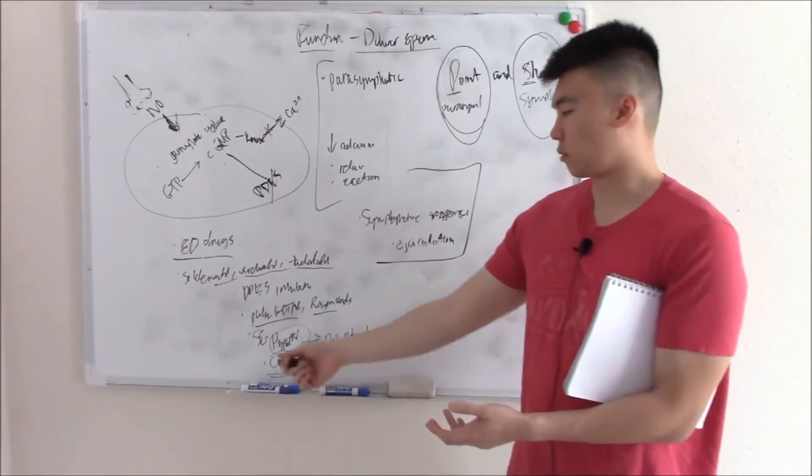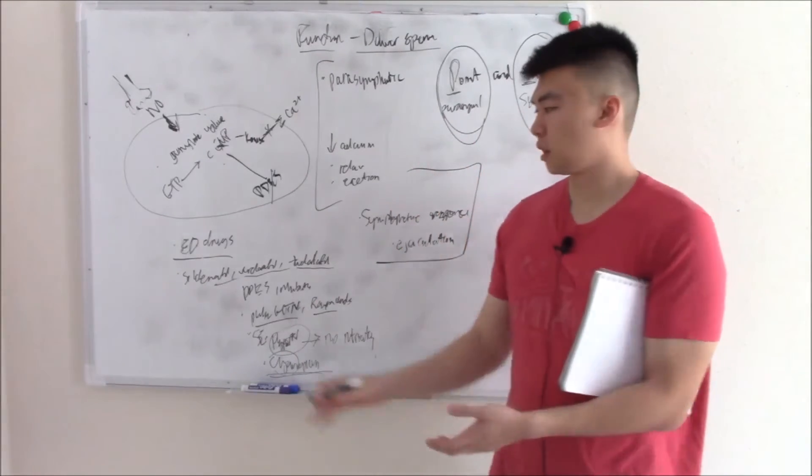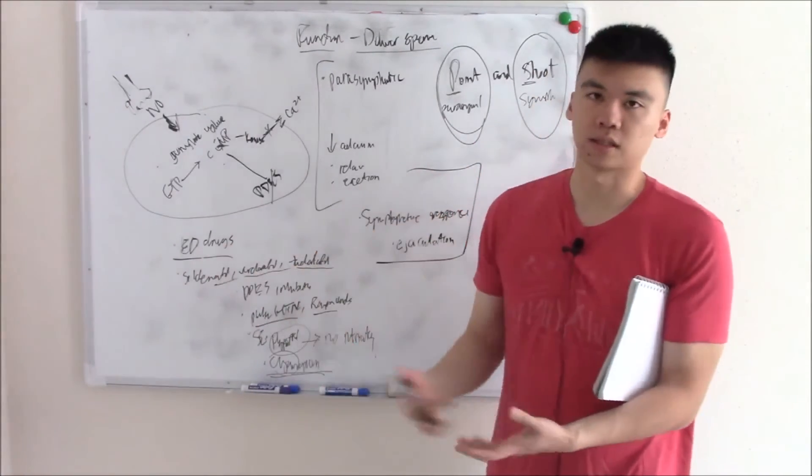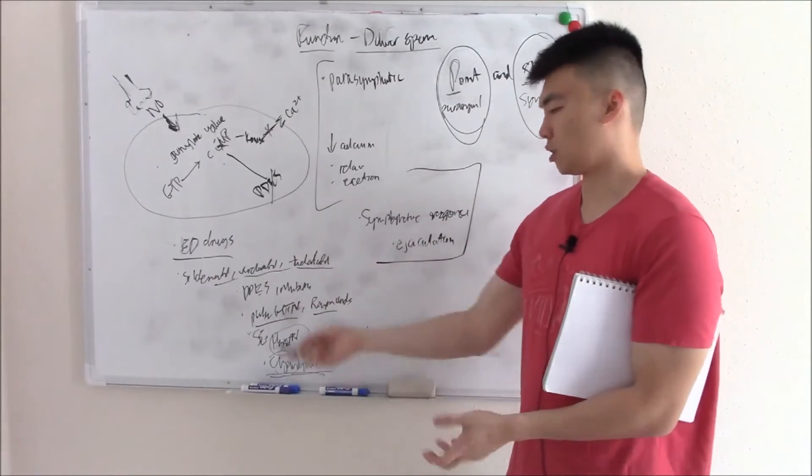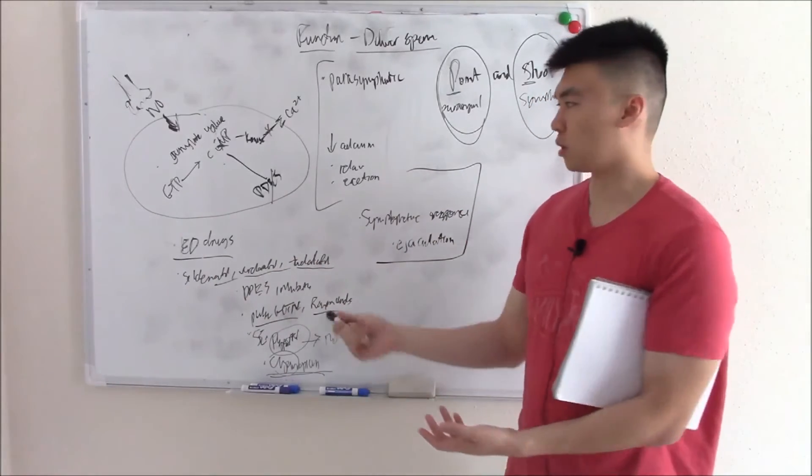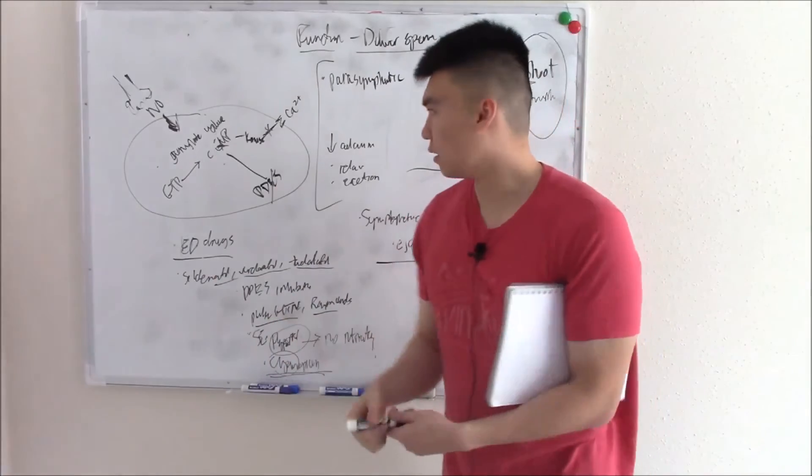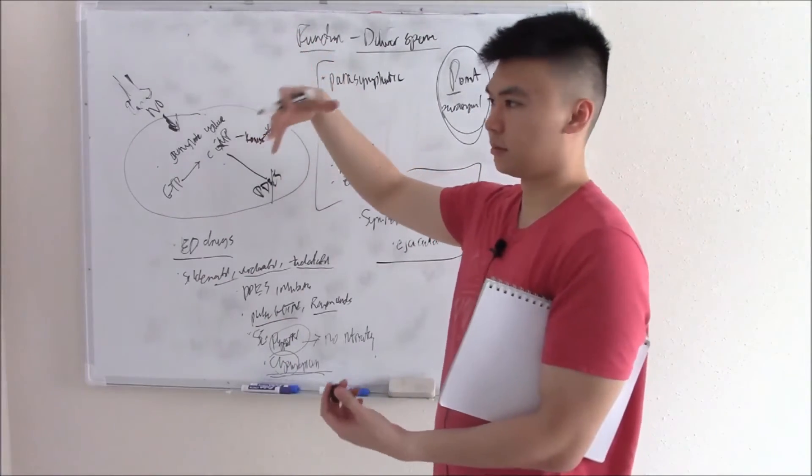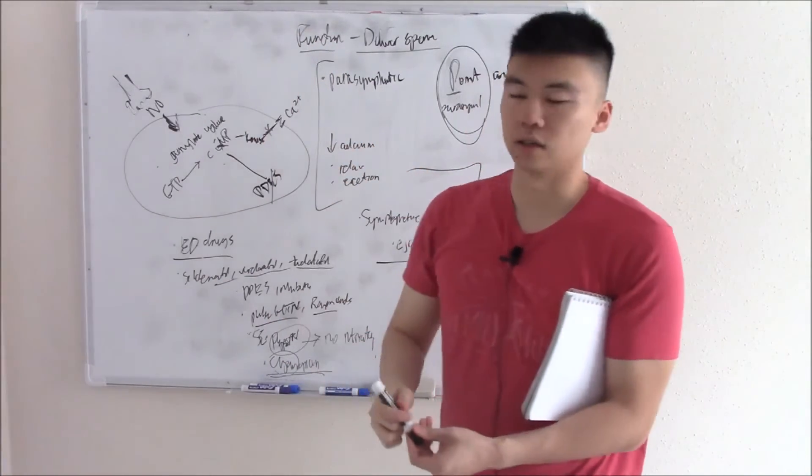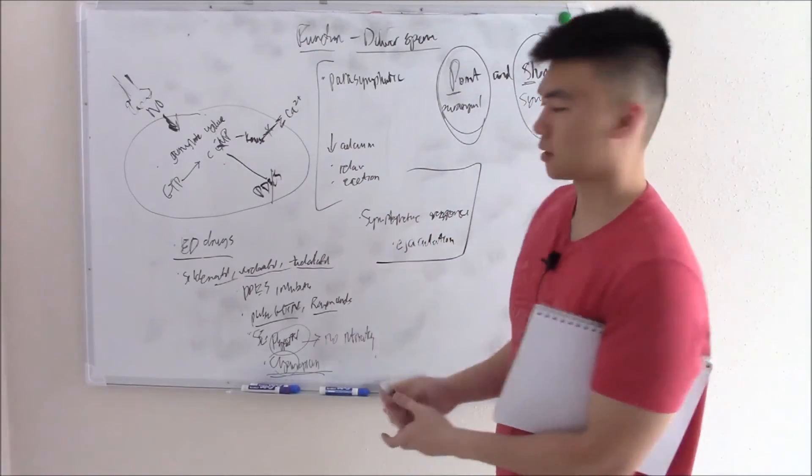So if someone comes in with blue tinted vision, you're suspecting ED drugs and then they might ask, what shouldn't the patient take? Nitrates. Or what does it do? Blocks PDE5, which decreases calcium, increases cyclic GMP, etc. So those are just some things they can ask. They'll just bundle it all into one question.